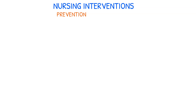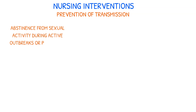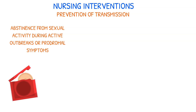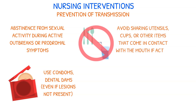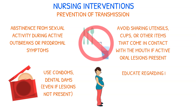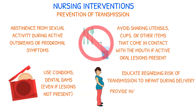Preventing transmission of HSV is a significant focus of nursing interventions. Educate patients about abstaining from sexual activity during active outbreaks or prodromal symptoms. Emphasize the importance of consistent and correct use of barrier methods such as condoms or dental dams, even when lesions are not present. Advise patients to avoid sharing utensils, cups, or other items that come into contact with the mouth if active oral lesions are present. Educate pregnant women about the risk of transmitting the virus to their infants during delivery and provide information about preventative measures.